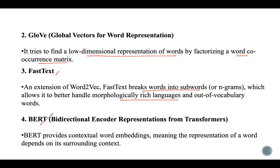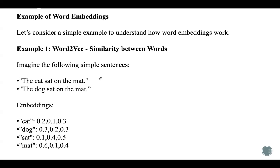BERT, which stands for Bidirectional Encoder Representations from Transformers, provides contextual word embeddings — meaning the representation of a word depends on its surrounding context. For example, the word 'bank' will have different embeddings based on context: it could mean a river bank or a bank loan. Based on the context, the meaning of the word changes, and this is represented better using the BERT model.